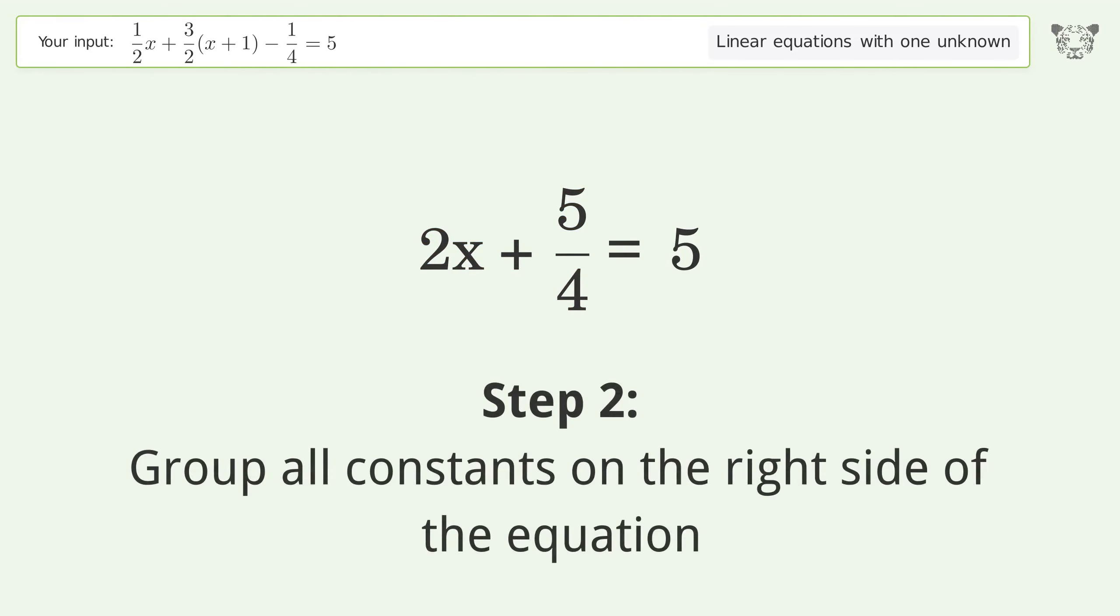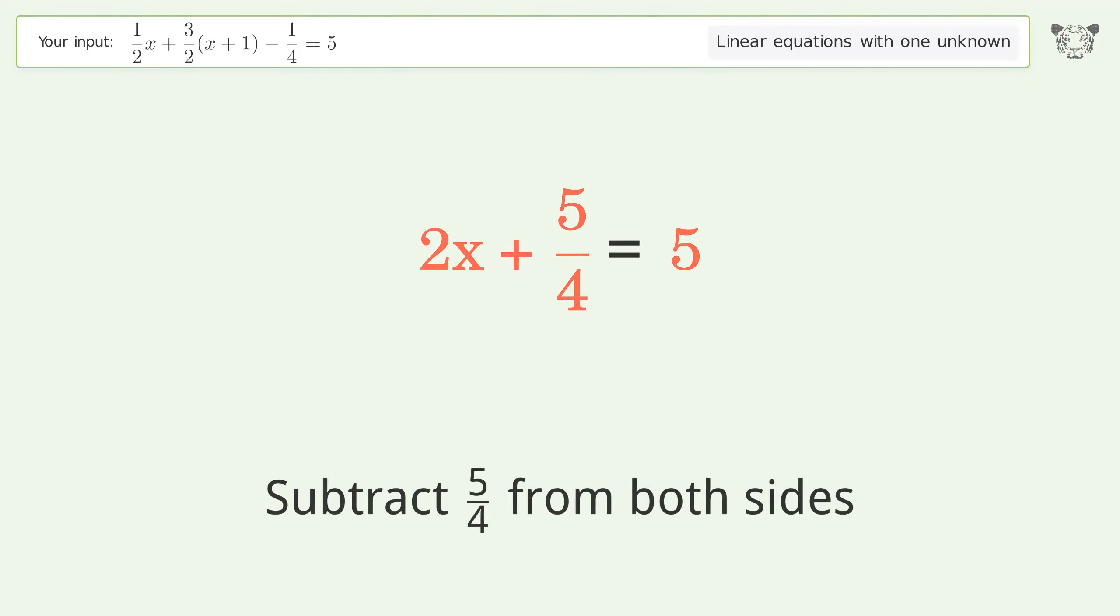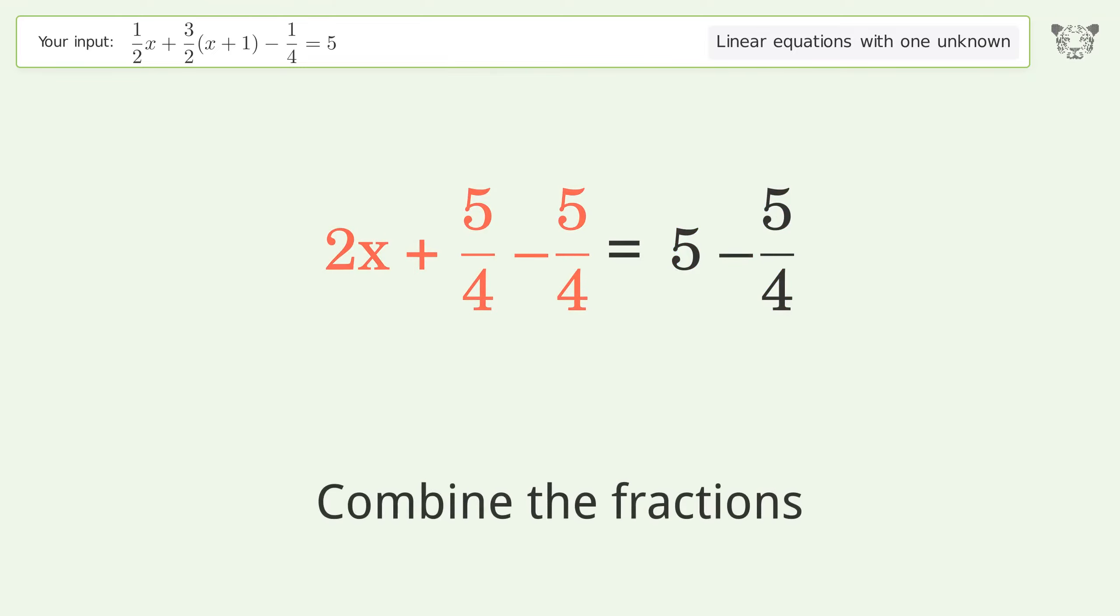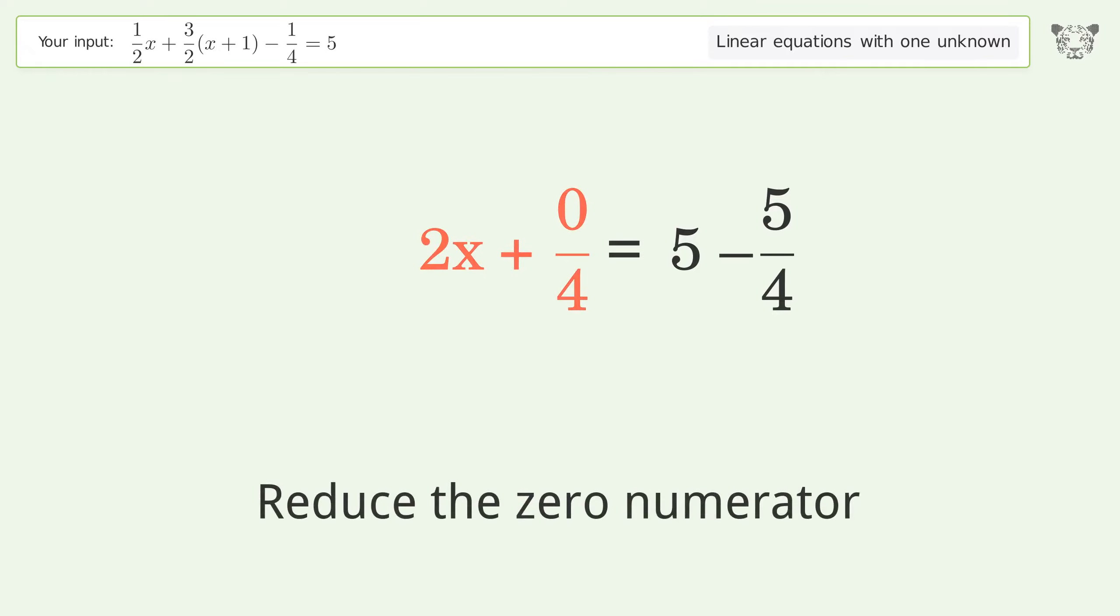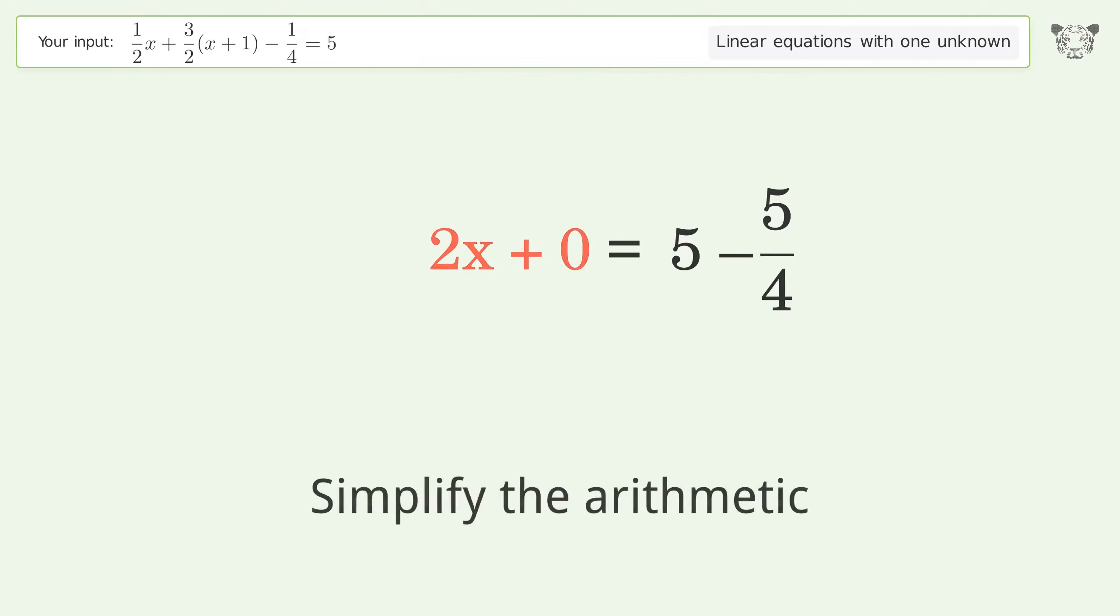Group all constants on the right side of the equation. Subtract 5 over 4 from both sides. Combine the fractions. Combine the numerators. Reduce the zero numerator. Simplify the arithmetic.